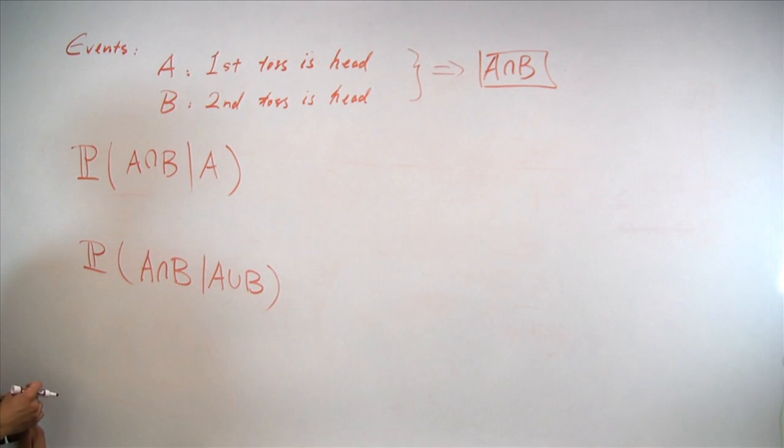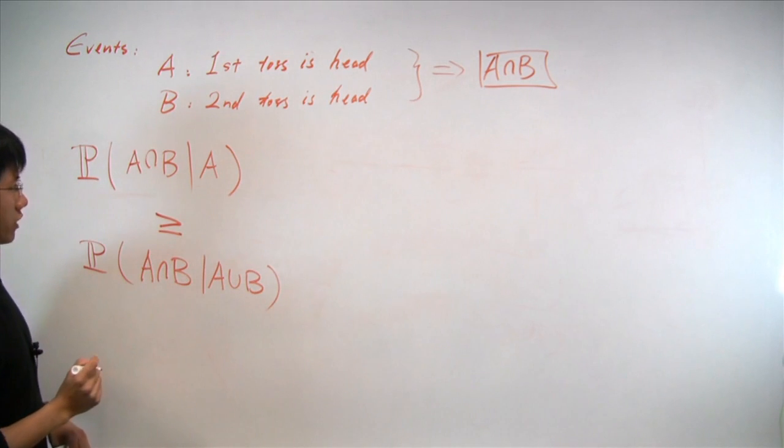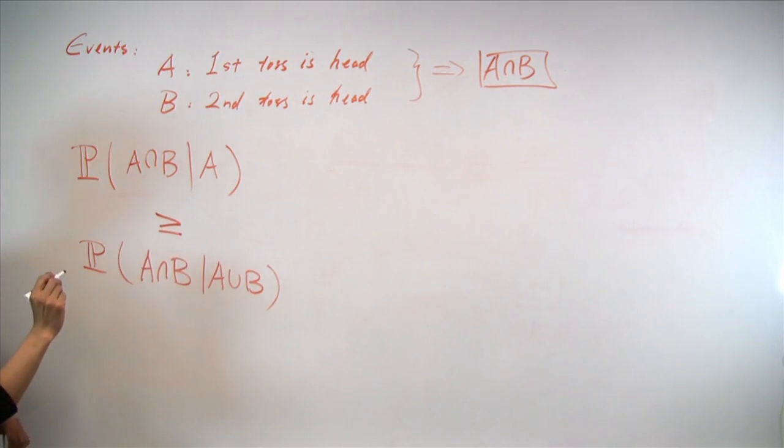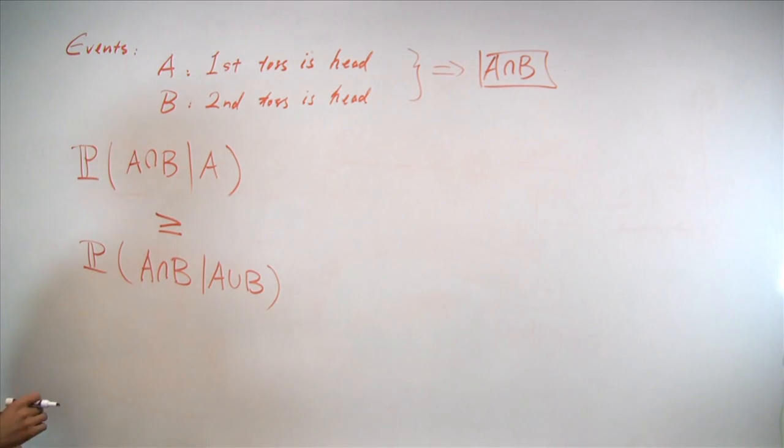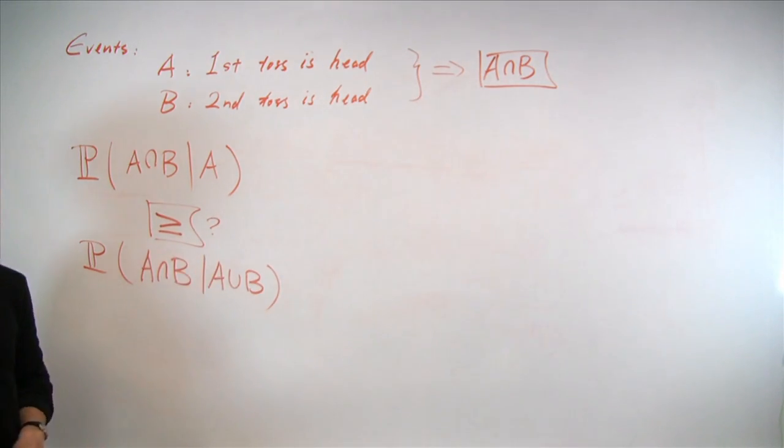So Alice in this problem says her guess will be that the first quantity is no smaller than the second quantity. Namely, knowing that the first coin toss is in the head somehow more strongly implies that both coin tosses will be in the head compared to the case that we only know at least one of the two coin tosses is in the head. And we'd like to verify if this inequality is indeed true.